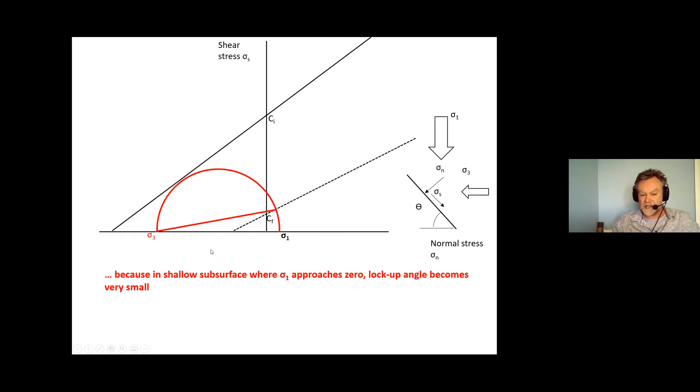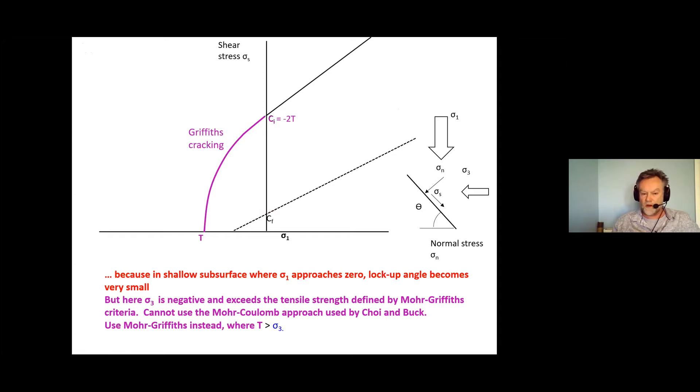But of course there are problems with this. The reason you would expect to get shallow slip is because in the shallow subsurface where sigma approaches zero lock up angle becomes very small. But when we approach the surface of course we can't do this because we start having Griffiths cracking. So instead of having Mohr-Coulomb criteria we're going to have Mohr-Griffiths criteria defined by a parabola which intersects the shear stress axis at the intact cohesion which has a value of minus 2t where t is the tensile strength. So what happens if we work in Mohr-Griffiths space rather than Mohr-Coulomb space?